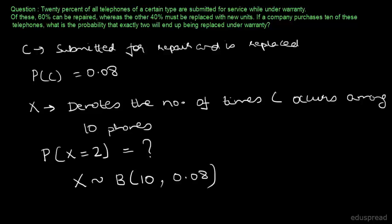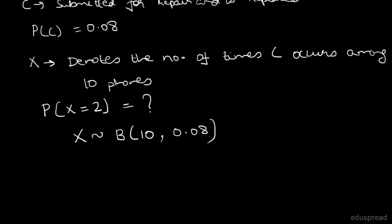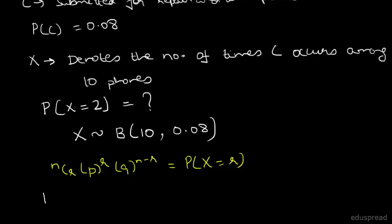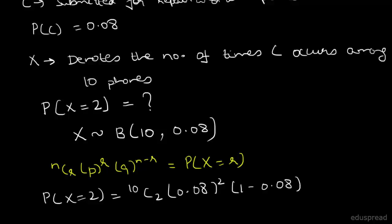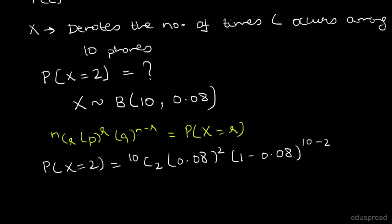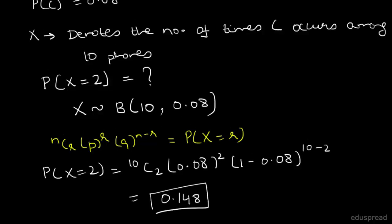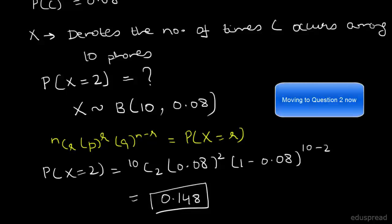Our problem boils down to finding the probability that X equals 2, where X follows a binomial distribution with N=10 and p=0.08. Using the binomial formula NCR times P raised to the power R times Q raised to the power N minus R, the probability that X equals 2 is 10C2 times 0.08 squared times 0.92 raised to the power 8, which gives 0.148.